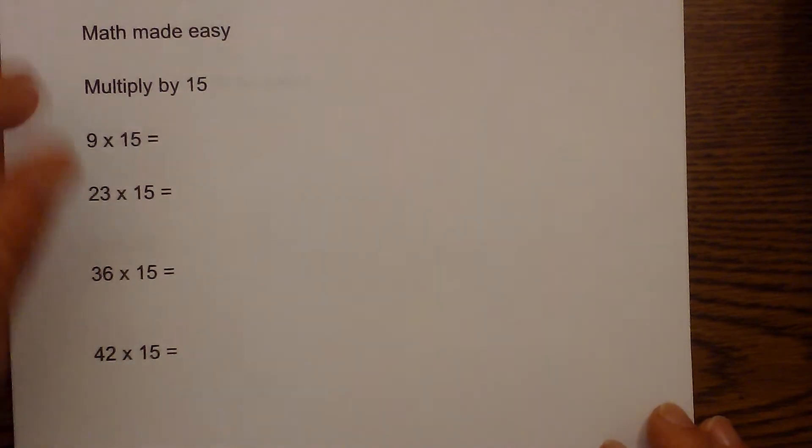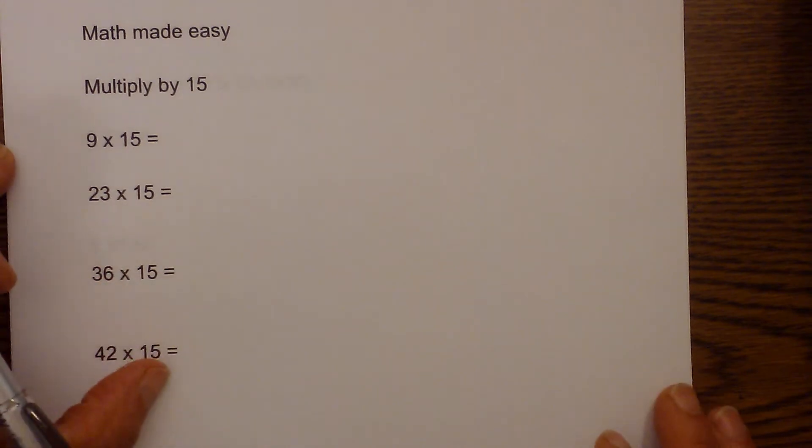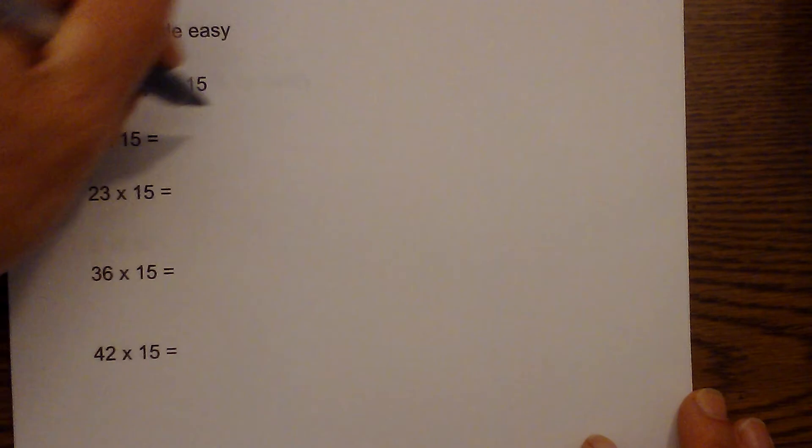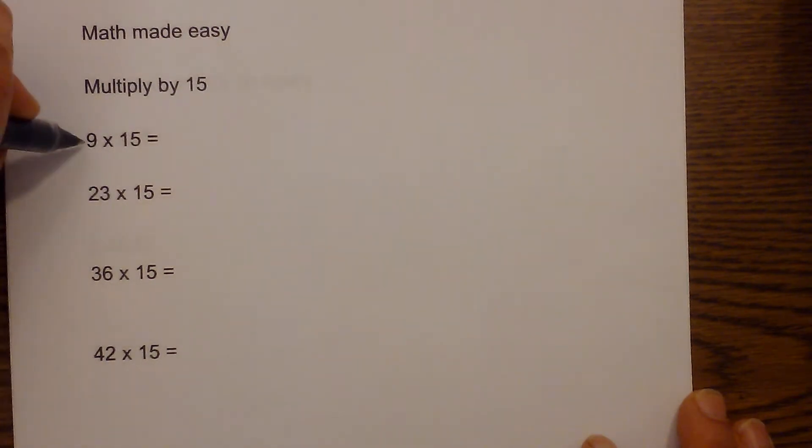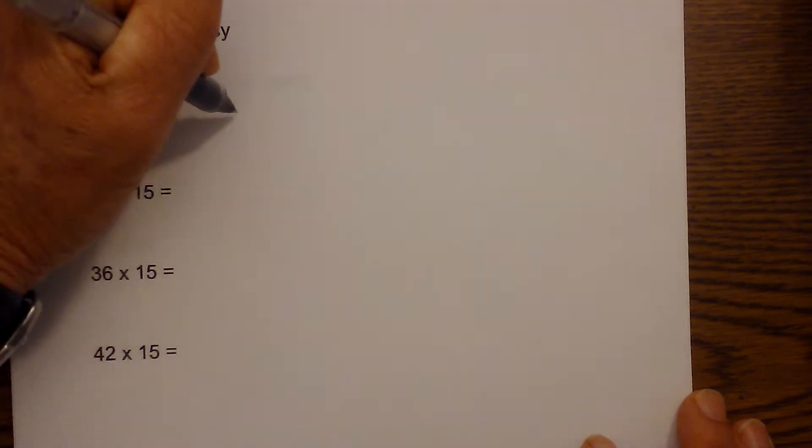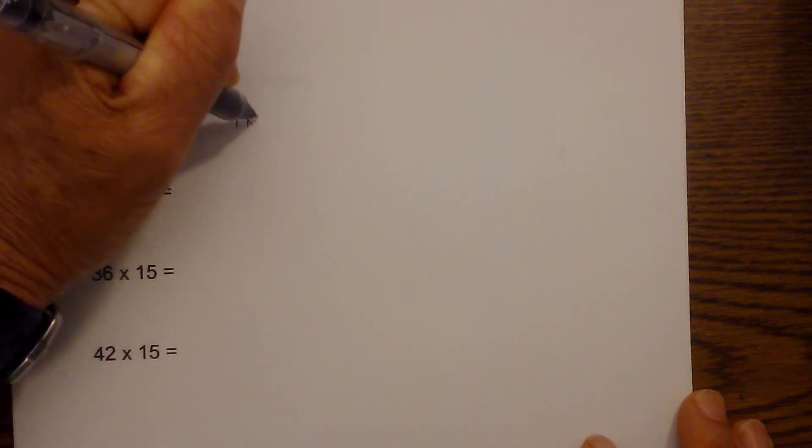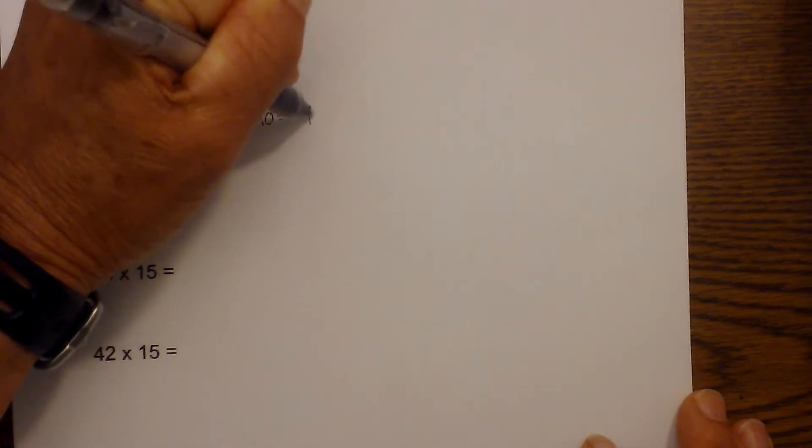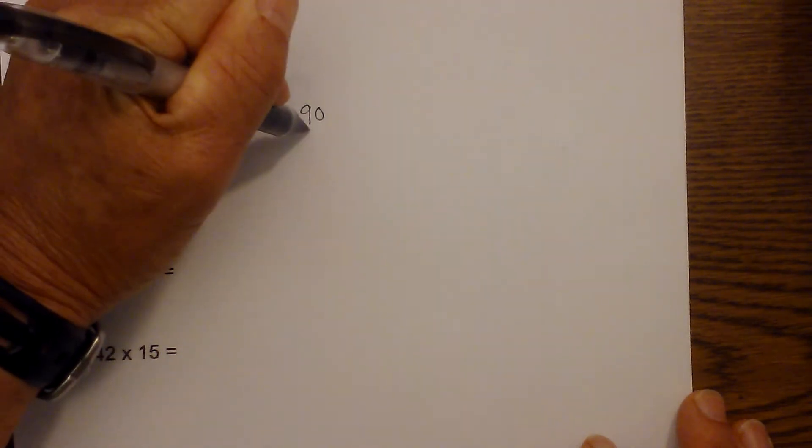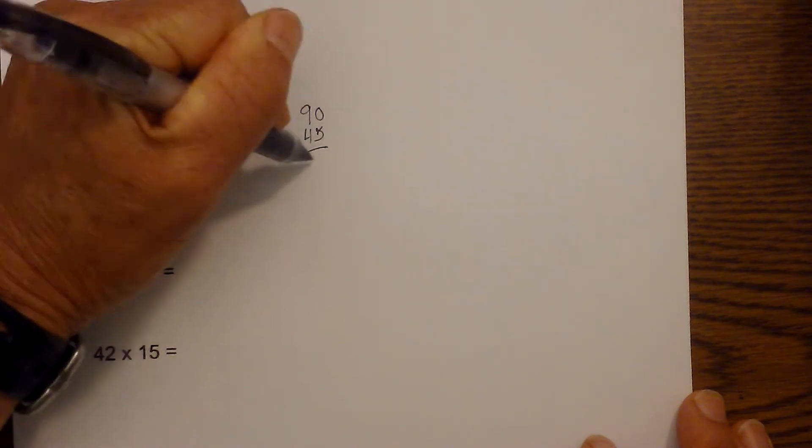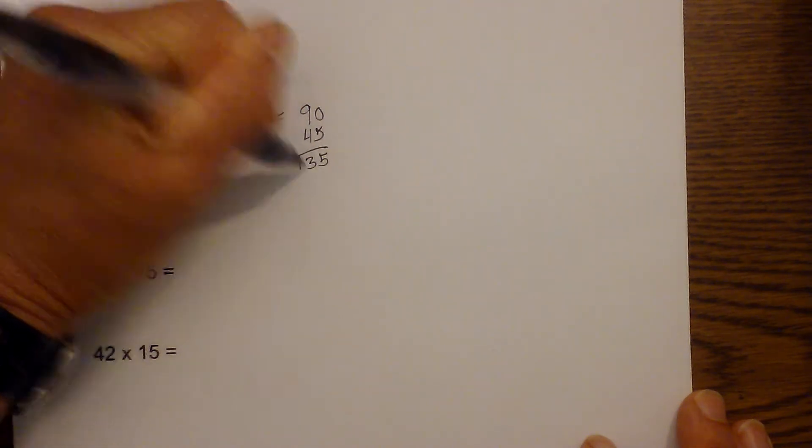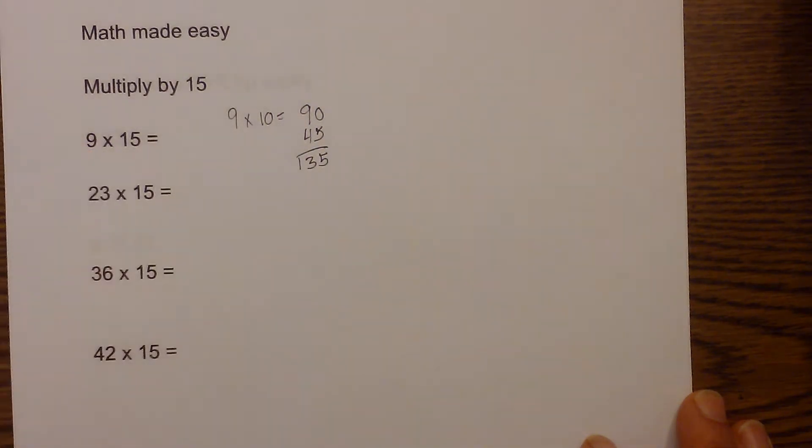So basically, here's how you can easily multiply by 15. You can actually almost do this in your head. Take the number, multiply it by 10. So we'll take 9 times 10, which is 90. Then take half of that, which is 45. Add those together, and 9 times 15 is 135.